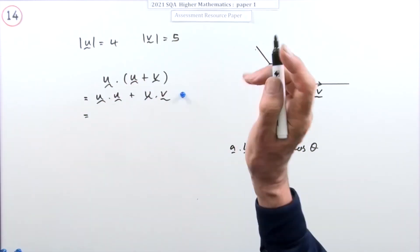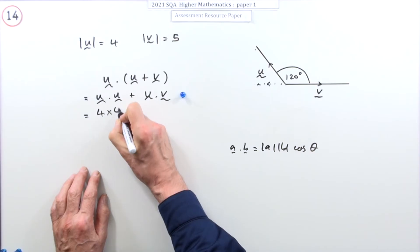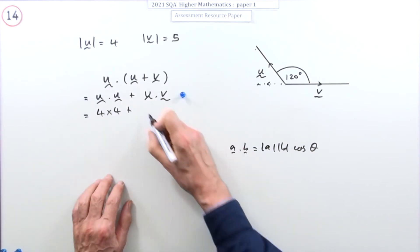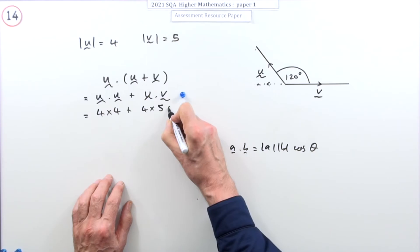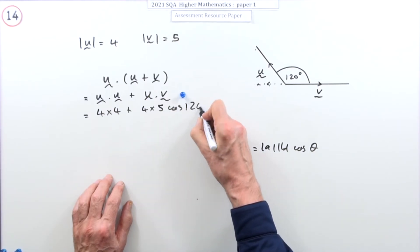Well u and u, they both go the same way as each other, that's fine. So it's all of it times all of it. Now what about u·v? Well that'll be 4 times 5, but it'll be times the cosine of 120°.